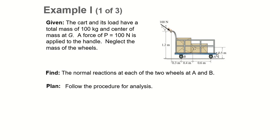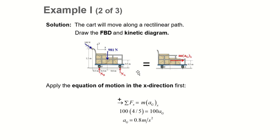We need to find the normal reaction at each of the two wheels at A and B, because they support the weight and balance the force. Without a balancing force, the cart would fly out. First, draw the free body diagram and put all known information — 981 N is your weight, 100 N applied force, and normal forces at A and B.